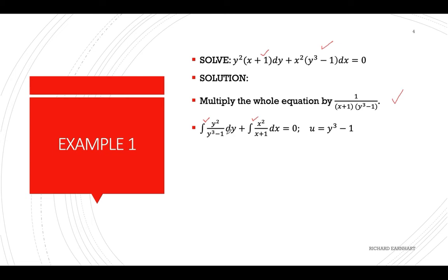For the first term, we let u equal y cubed minus 1, whose derivative is 3y squared dy. So we have a correction factor of 1/3 here — this will be your du with a correction factor of 1/3.